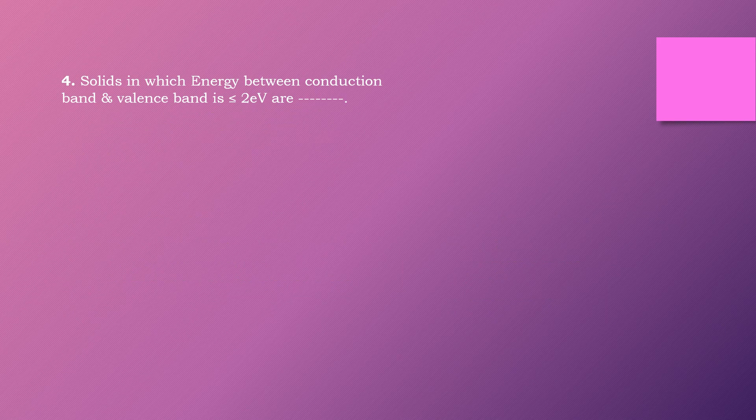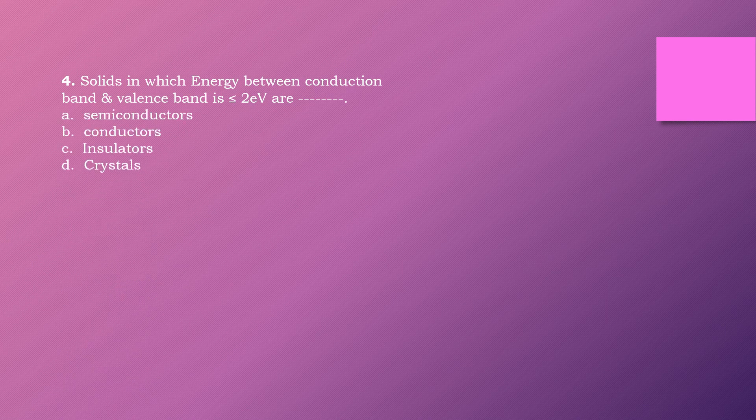Question four: A solid in which energy between conduction band and valence band is less than or equal to two electron volt is called dash. Options are: semiconductor, conductor, insulator, crystal. The right answer is option A: semiconductor.